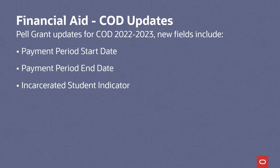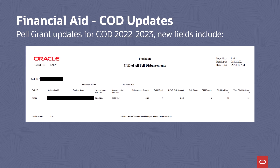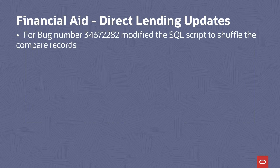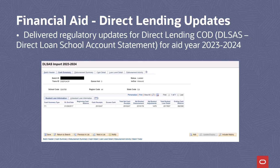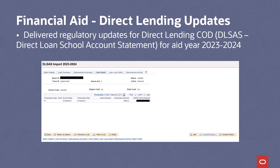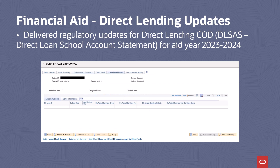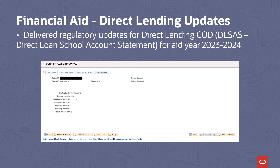We delivered regulatory updates for Pell Grant for COD aid year 23-24. This project includes modifications to fields, records, SQL, file layout, and PeopleCode. As part of the 22-23 COD updates, new fields were implemented for Pell Grants: payment period start date, payment period end date, and incarcerated student indicator. We have updated the Pell Grant reports so that these new fields appear in the Pell Grant year-to-date and Pell Grant electronic state-of-account reports. Moving to direct lending, we modified the SQL script to shuffle the compare records so the cost of attendance isn't reset to zero during the origination and outbound processes for direct loans. We delivered objects for regulatory updates for the direct loan school account statement for aid year 23-24, including field length changes for gross amount, net amount, and other fields as per the 23-24 layout.